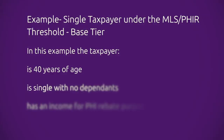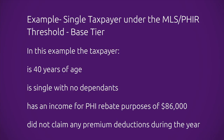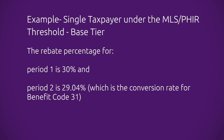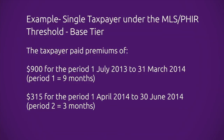Let's do an example by transposing the details from the health fund statement into the fields in the worksheet. The taxpayer is single and 40 years of age with an adjusted taxable income of $86,000, who did not claim any premium deductions during the year. The rebate percentage for period 1 is 30% and for period 2 is 29.04%. The taxpayer paid a premium to the fund of $900 in period 1 and $315 for period 2.